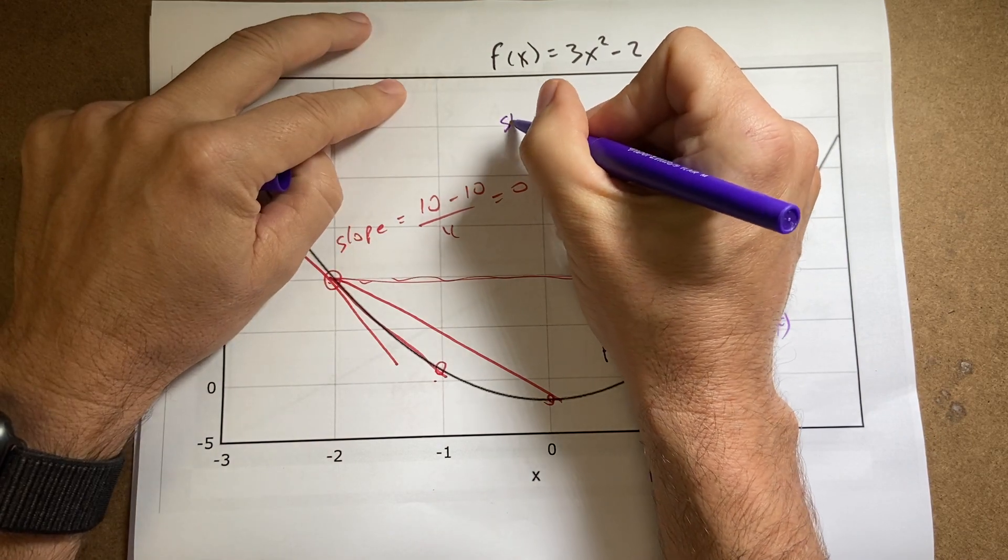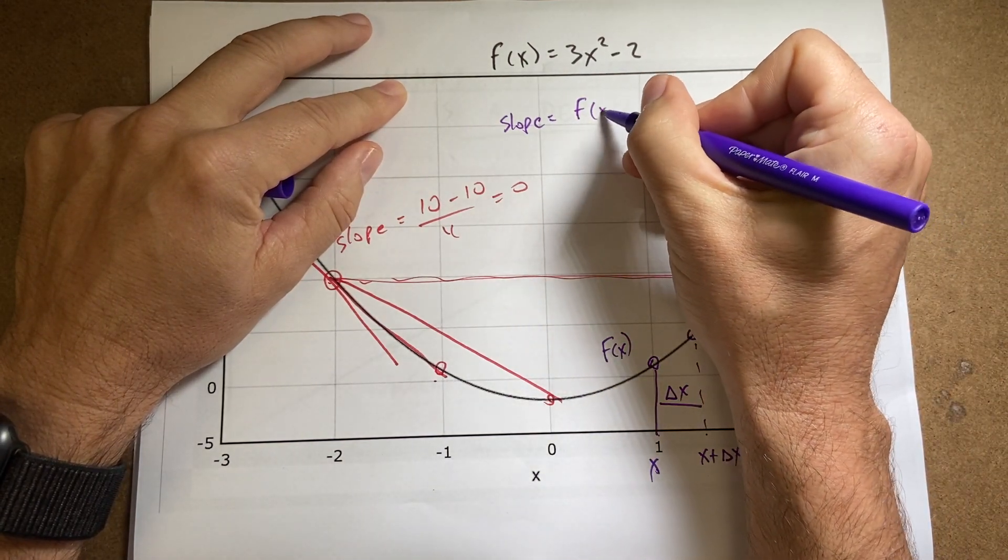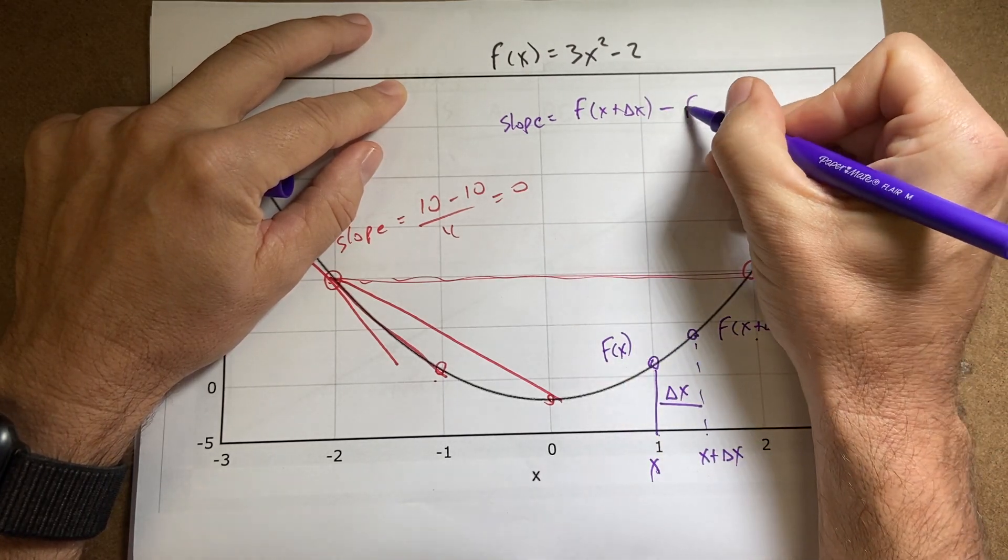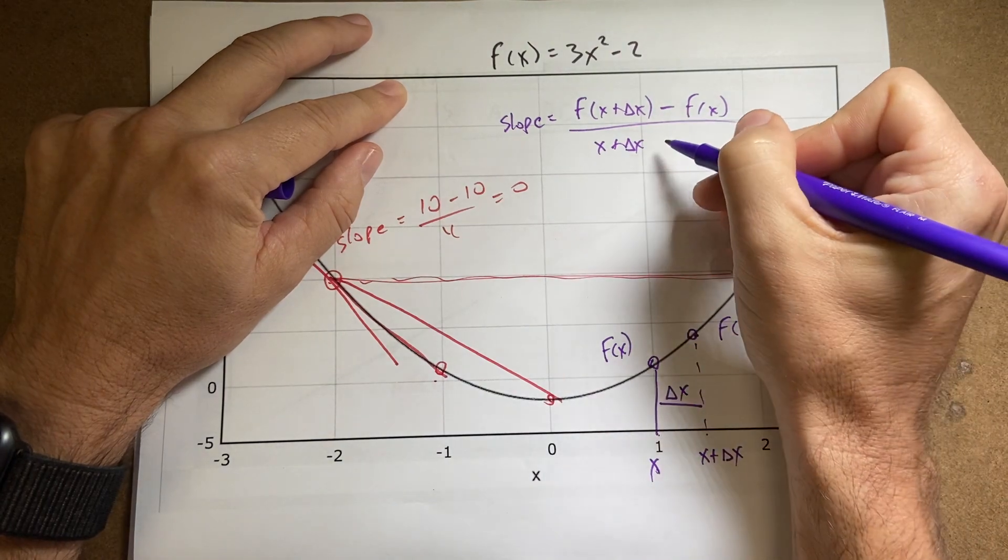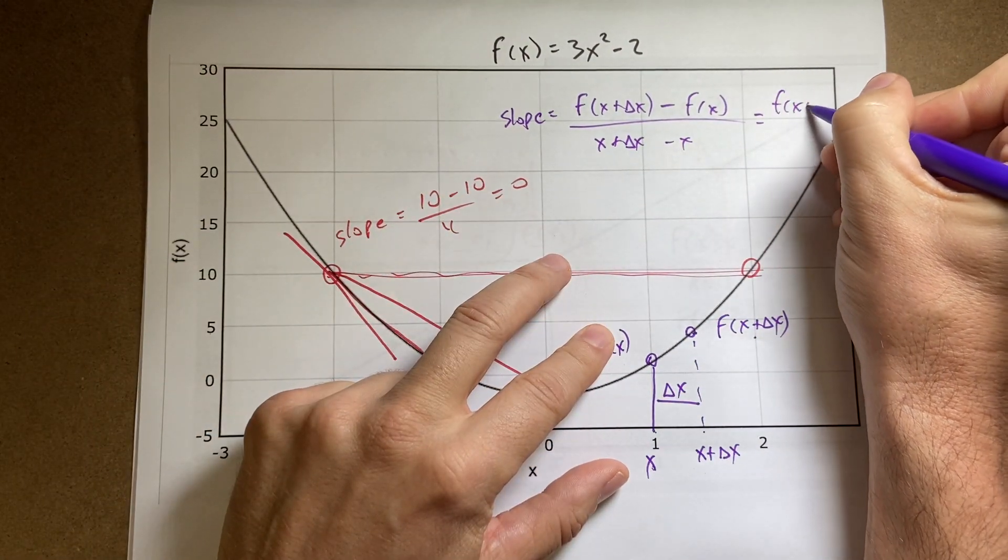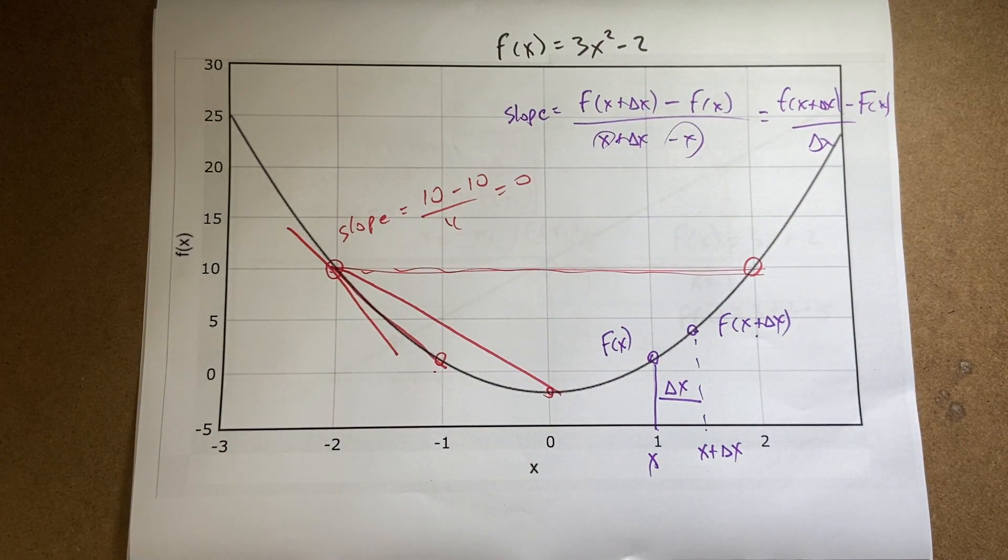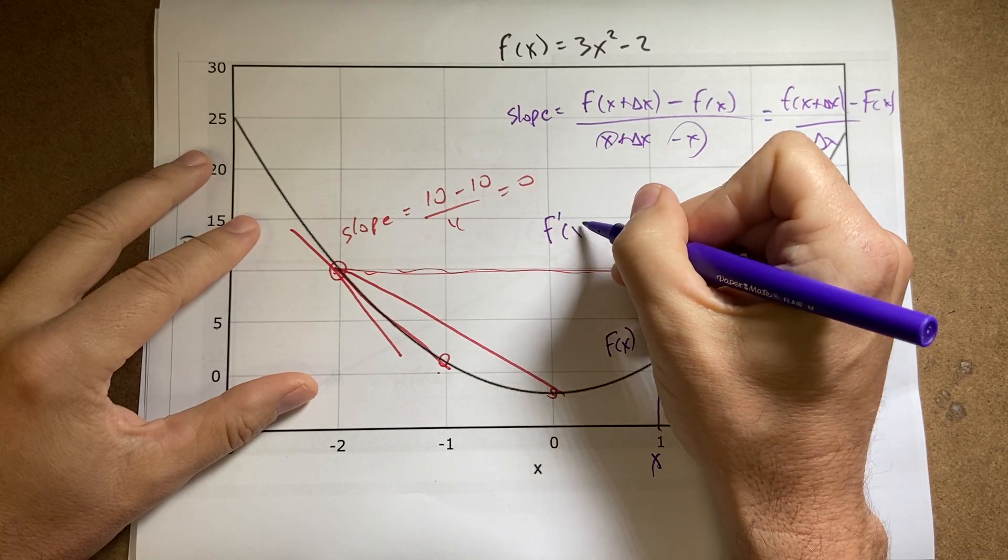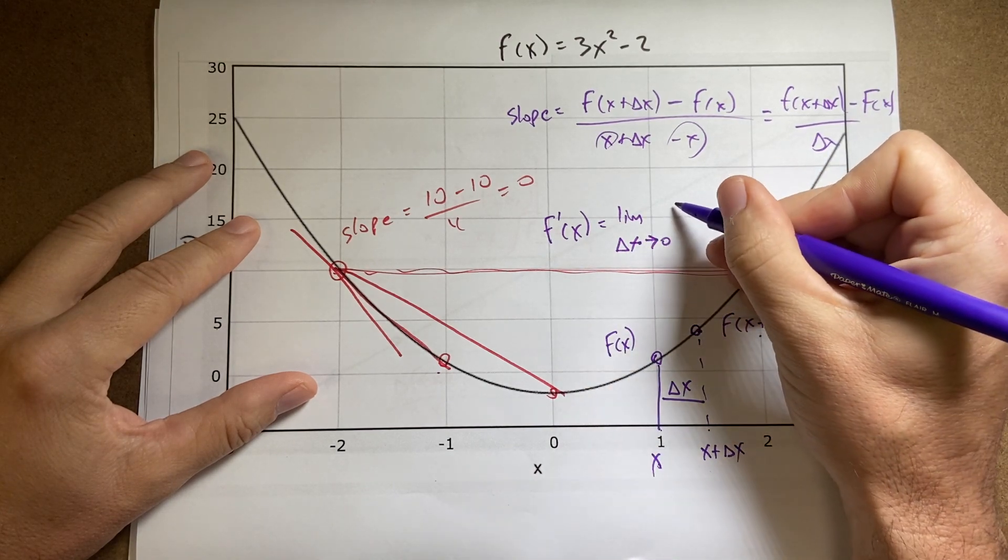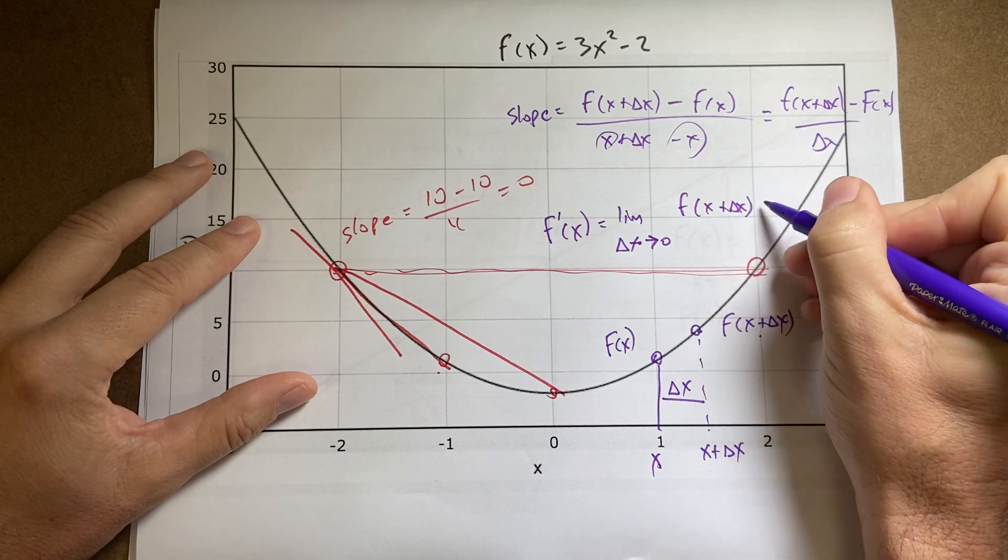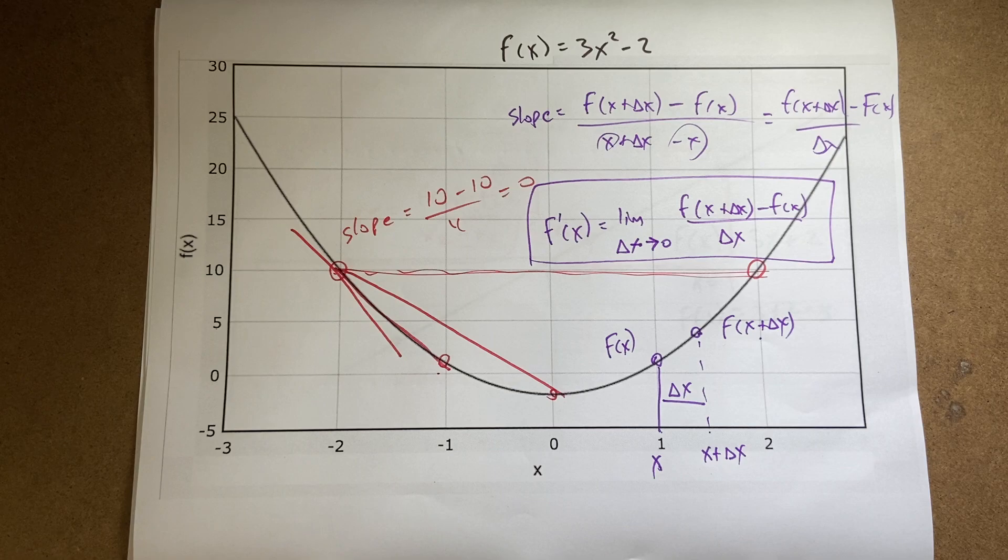So let's write out the slope equation. Slope, it's going to be the change in the vertical. So it's going to be this, f of x plus delta x minus that one, f of x, over the change in the horizontal, which is this value, x plus delta x minus x. And that's just going to be f of x plus delta x minus f of x over delta x, because these things cancel. And so the actual derivative, we call this f prime of x, is going to be equal to the limit as delta x goes to zero of f of x plus delta x minus f of x over delta x. And that's your formal definition of the derivative.